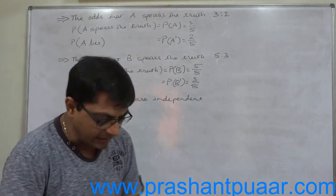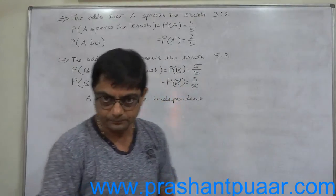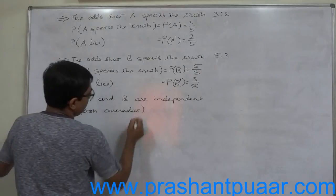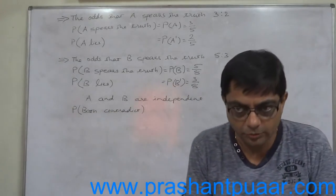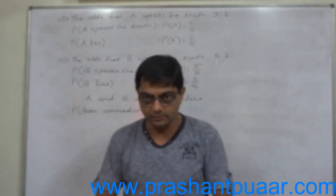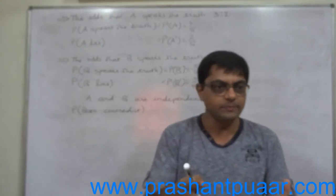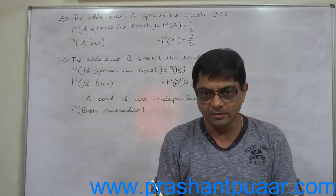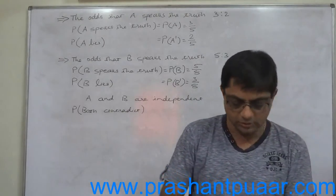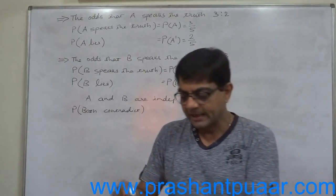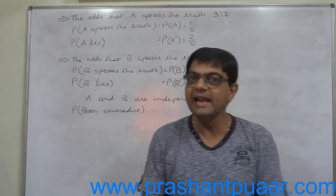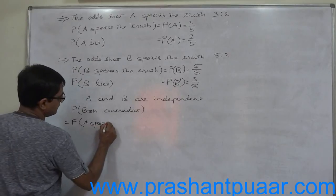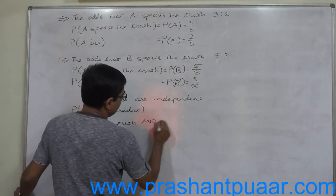In what percentage of cases are they likely to contradict each other on an identical point? That means we need the probability that both contradict. How can A and B contradict each other? Contradiction means on the same point both are speaking something different — one is speaking truth and another is lying. This is possible in two mutually exclusive ways: A speaks the truth and B lies, or A lies and B speaks the truth.